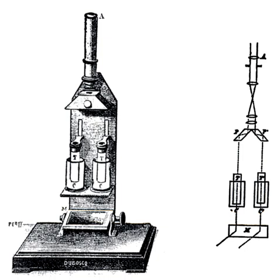In physical and analytical chemistry, colorimetry is a technique used to determine the concentration of colored compounds in solution. A colorimeter is a device used to test the concentration of a solution by measuring its absorbance of a specific wavelength of light, not to be confused with the tristimulus colorimeter used to measure colors in general.